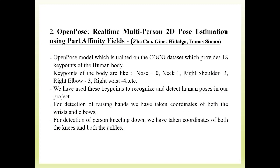The next paper is 'OpenPose: Real-Time Multi-Person 2D Pose Estimation Using Part Affinity Fields' by Zhe Cao and Thomas Simon. This paper helped us perform pose estimation using OpenPose, a model trained on the COCO dataset. The model provides 18 key points, which we used to identify the required poses of hands up and kneel down, to detect anomalies and determine whether a robbery situation is occurring.